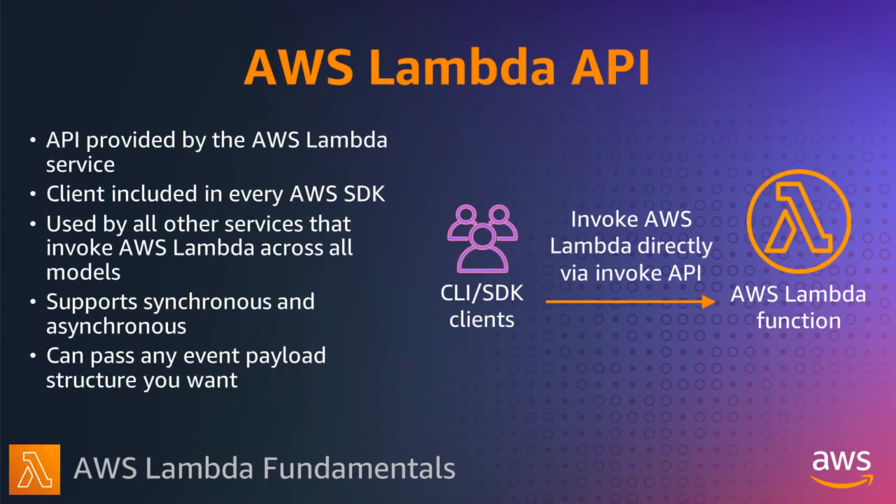The Lambda API is the front door to Lambda. It's an API provided by the Lambda service which is used by all clients and services that invoke Lambda functions. These include CLI and SDK calls, as well as services that invoke your function in response to events. This is the only way to invoke a Lambda function — you can't SSH into a function or invoke it via any other path. For another AWS service to invoke your function directly, you create what is called an event trigger.